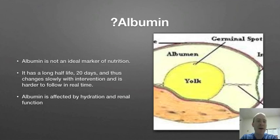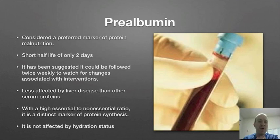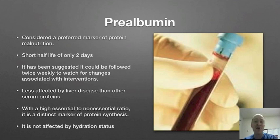Prealbumin is considered the more preferred protein marker. It has a short half-life of only two days, so it really tells you what has been happening recently with your patient. It's been suggested it could be followed twice weekly to watch for changes associated with your interventions. Liver disease has less effect on it than other serum proteins, and it has a high essential to non-essential amino acid ratio, making it a distinct marker of protein synthesis. It's also not affected by hydration status.